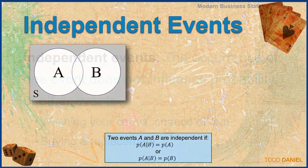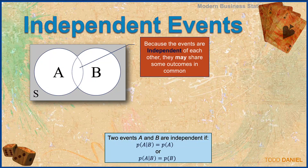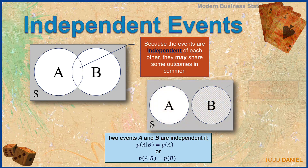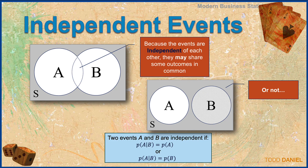A Venn diagram of independent events can look one of two ways. Because the events are independent of each other, they may share some outcomes in common — there may be an overlap — but that overlap is not required. Independent events could have nothing in common with each other. Two events A and B are independent if the probability of A given B equals the probability of A, or likewise, the probability of A given B equals the probability of B.